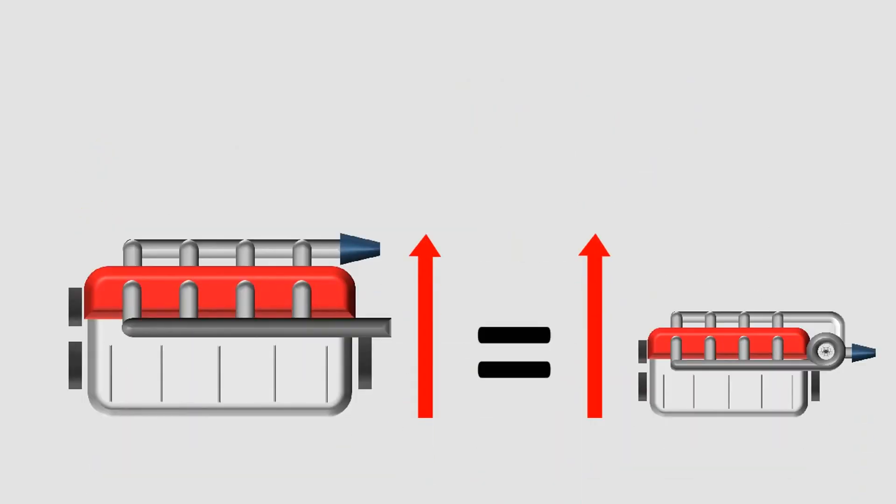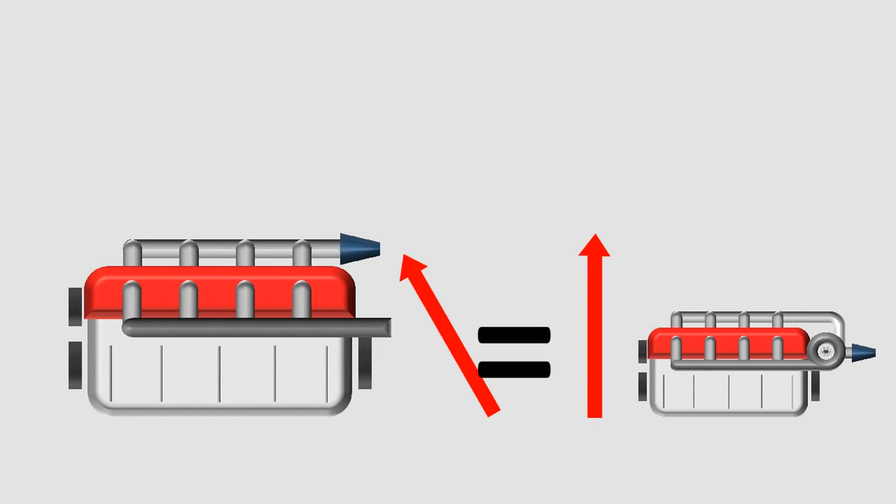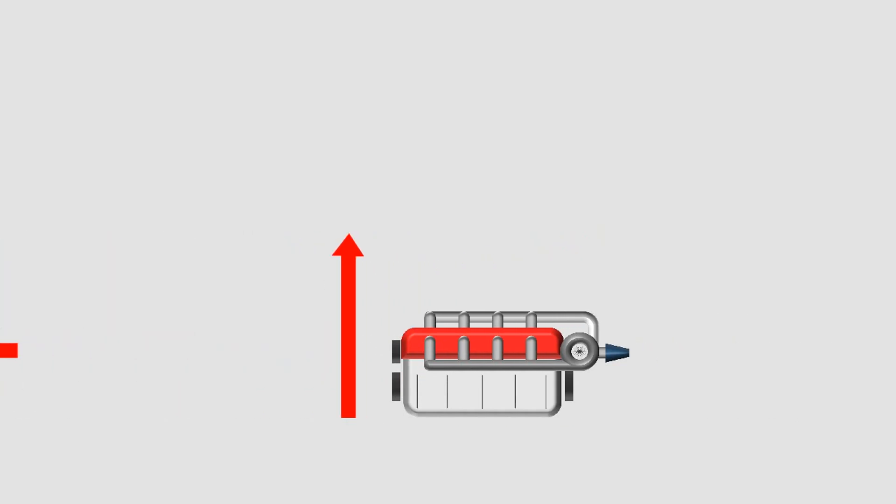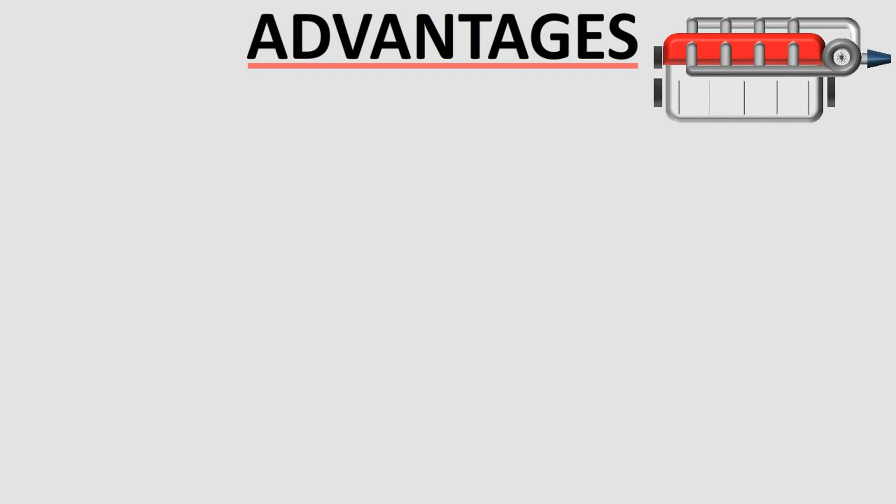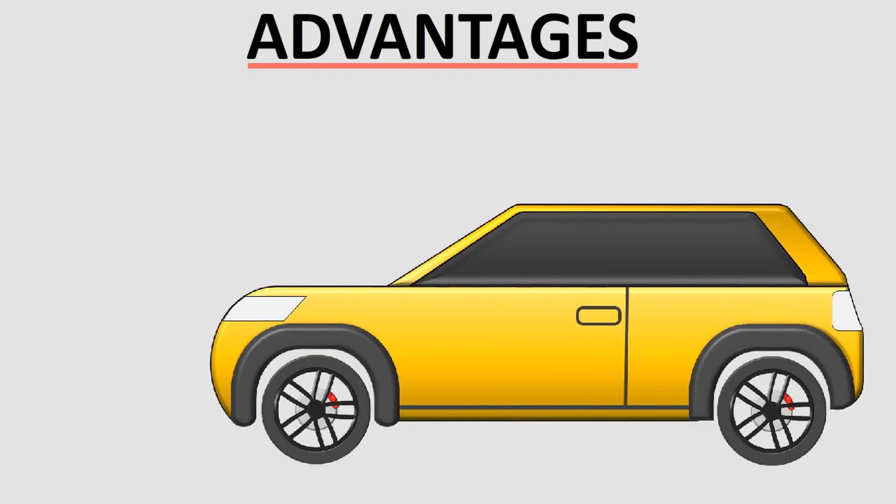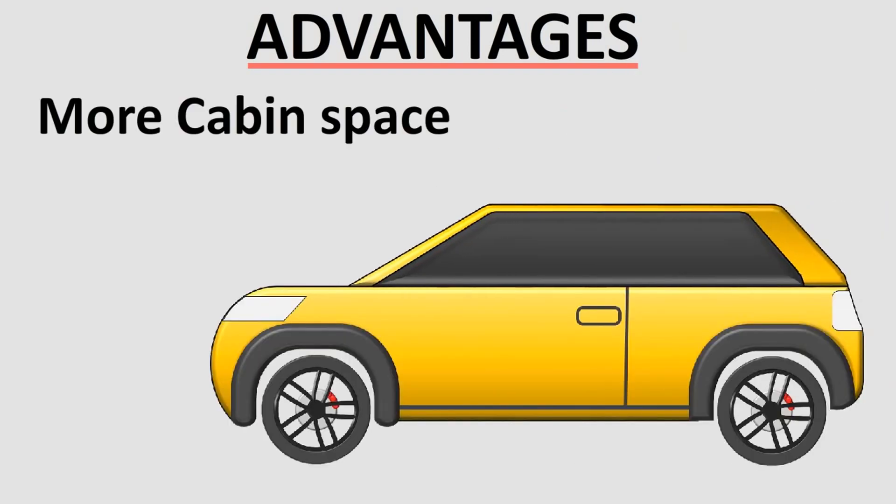When you get the same power from a smaller engine, you no longer need to put a bigger engine in your car. Smaller engines have a lot of advantages, like they consume less space in your car. So you get more cabin space within that same footprint of car.